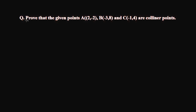Based on the area of the triangle, we have another question: Prove that the given points A(2, -2), B(-3, 8), and C(-1, 4) are collinear points. The collinear concept — 'col' means together and 'linear' means line — so points which are together in a line are called collinear points. Here we have points A, B, and C.